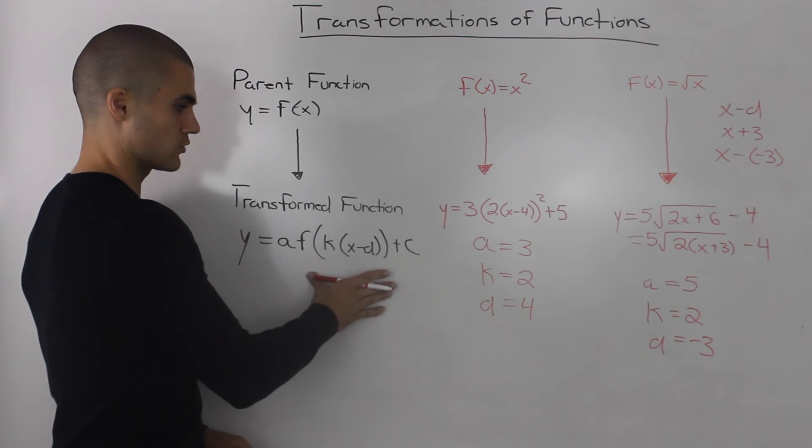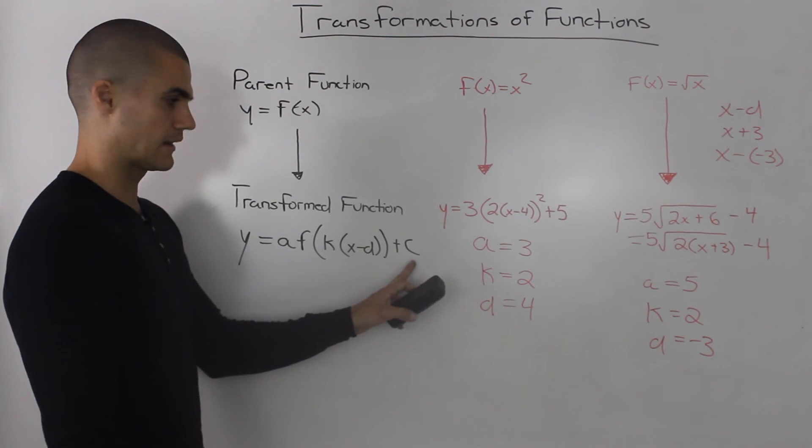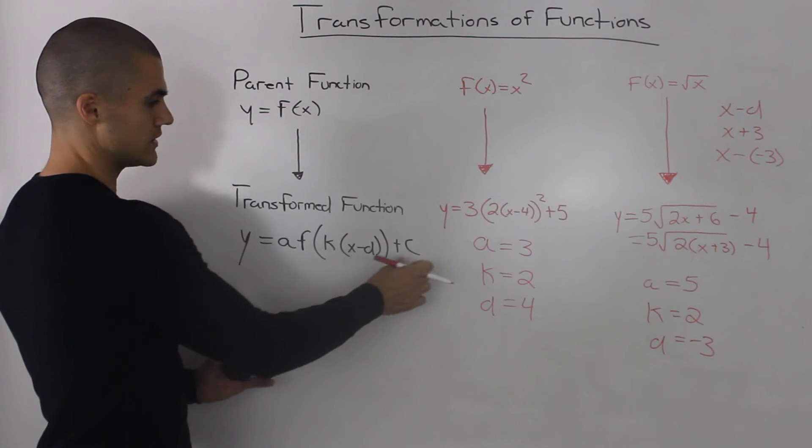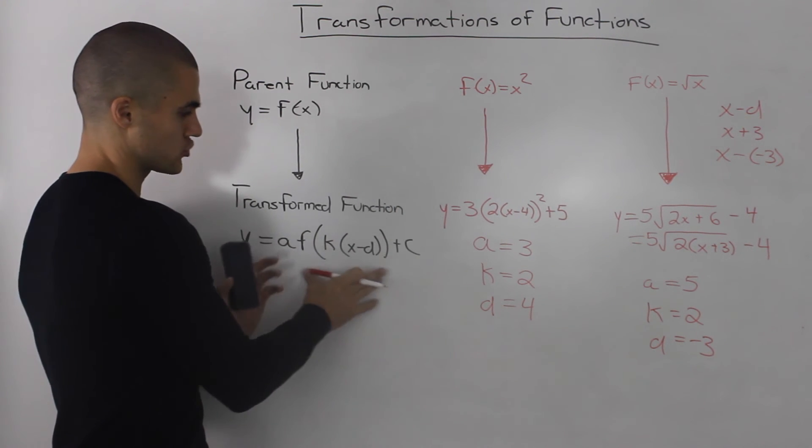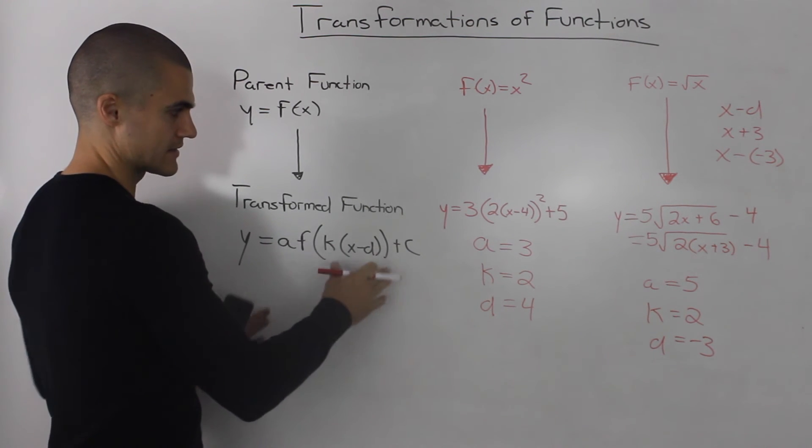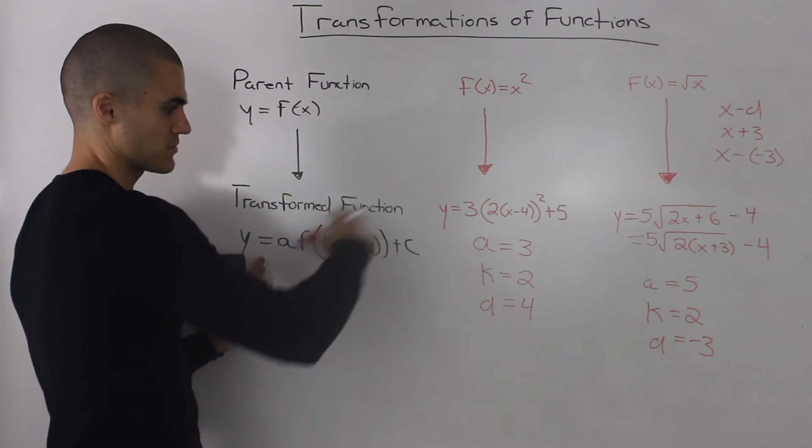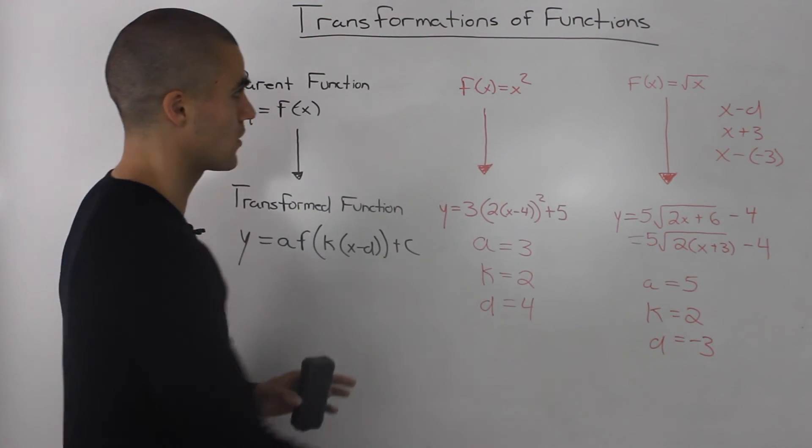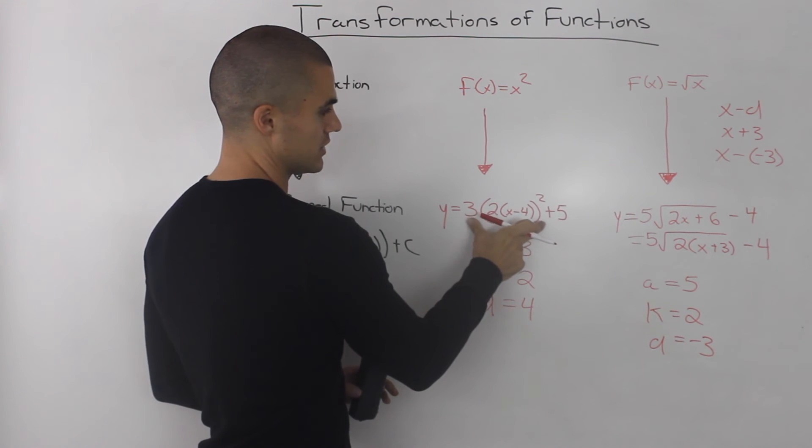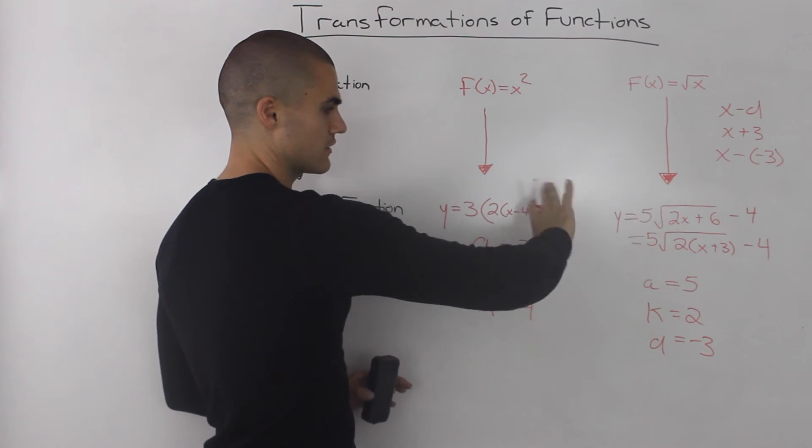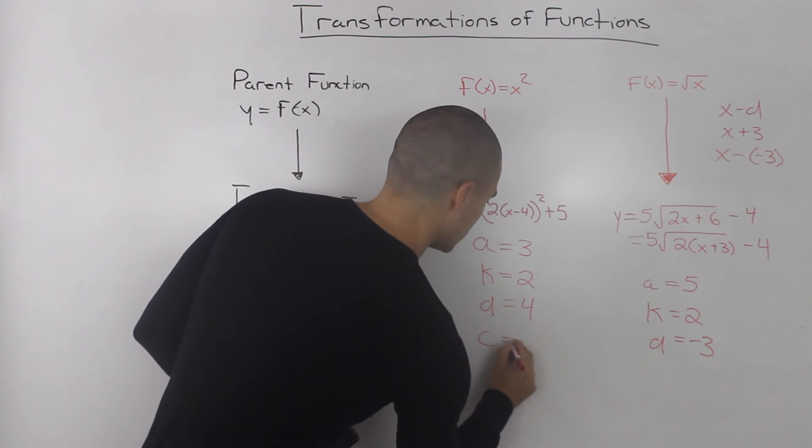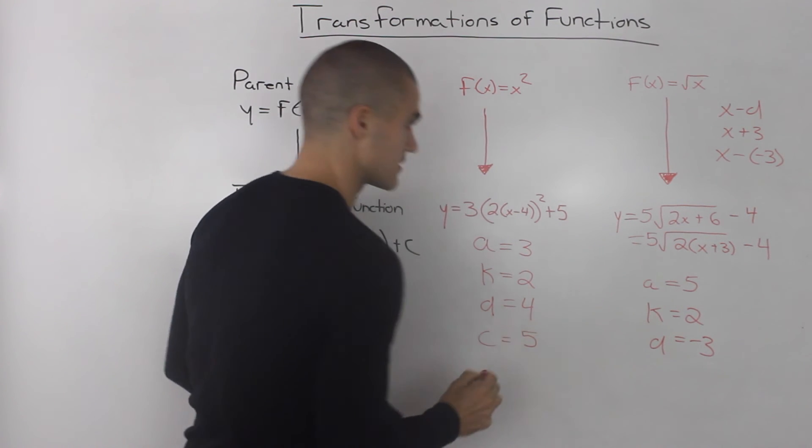And finally going back to the general transformation, let's deal with the c value. The c value is always a value that's added or subtracted on top of this whole expression. It's kind of not attached to the expression, it's outside of it. So this x² corresponds to this function here and notice how this +5 is kind of outside of it. It's just added on. So the c value in this case is positive 5.